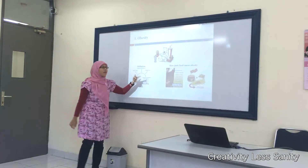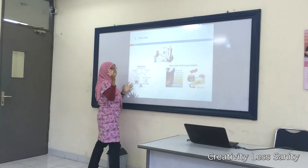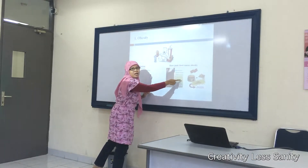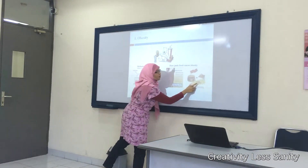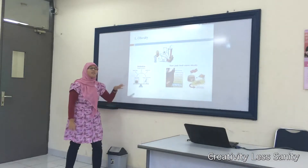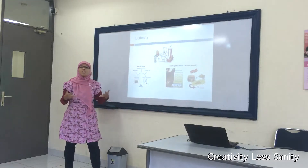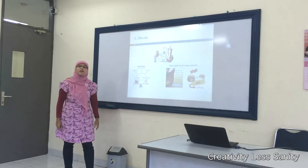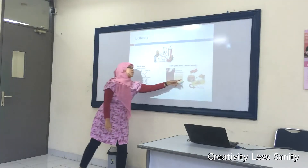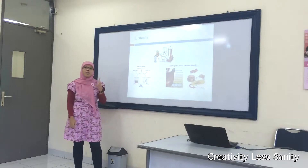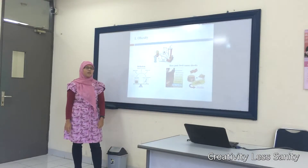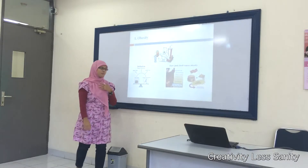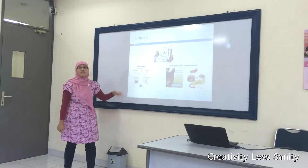Why does junk food cause obesity? As you can see in the picture, this is a hamburger with a large portion. If you eat this, it contains 1,000 calories. So you must burn those calories with a minimum of 6 hours of cycling. If you eat just one hamburger, you must burn your calories with 6 hours of cycling. So be careful of junk food.